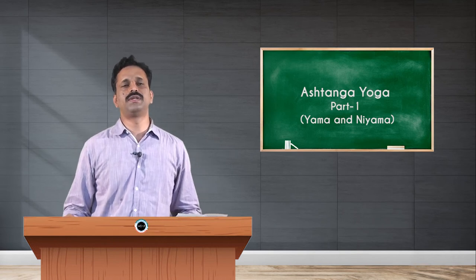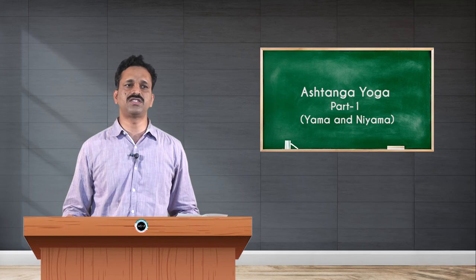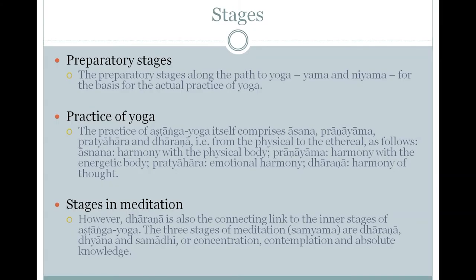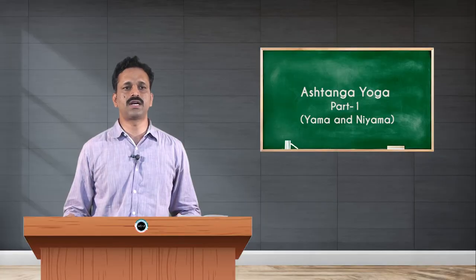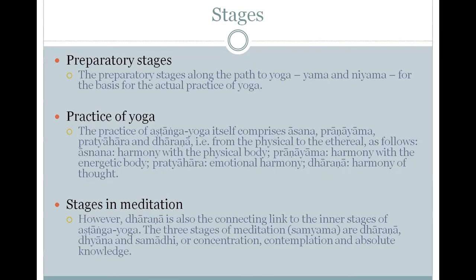Ashtanga Yoga has been divided into three stages. The first is the preparatory stage, the second is the practicing stage, and the third is the stage of meditation. The preparatory stage covers the base of yoga, that is Yama and Niyama. The practicing stage comprises Asana, Pranayama, Pratyahara, and Dharana. The stage of meditation tells about the connecting link between the inner stages: Dharana, Dhyana, and Samadhi.